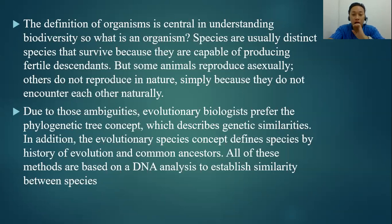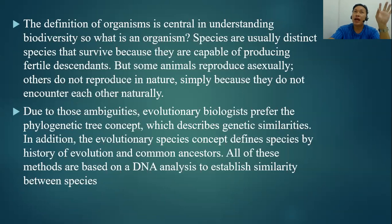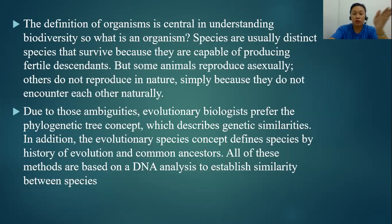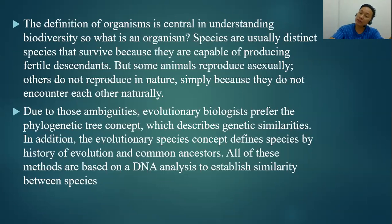Due to ambiguities in the definition and function of species, some evolutionary biologists prefer the phylogenetic tree concept. The phylogenetic tree shows that humans are related to invertebrate animals that survived millions of years ago. The first species to thrive were chordates like fish, because the early earth was mostly water. Later came apes — homo erectus and homo habilis — and then modern humans. The evolutionary species concept defines species by their history of evolution and common ancestors, all based on DNA analysis to establish similarity between species.